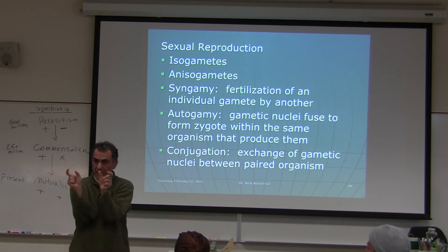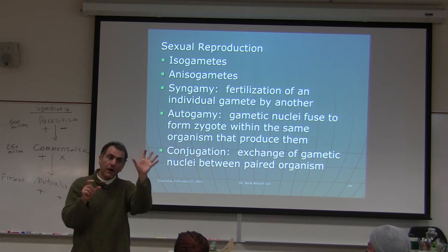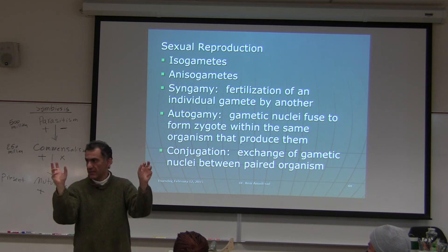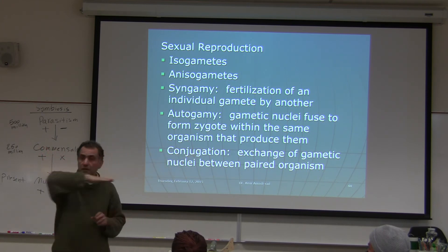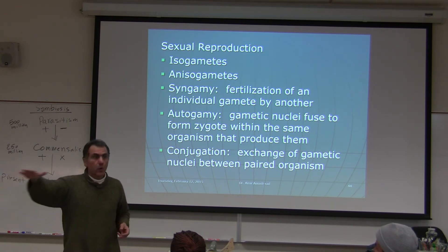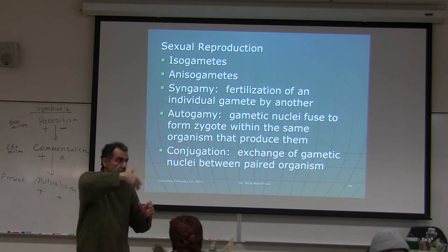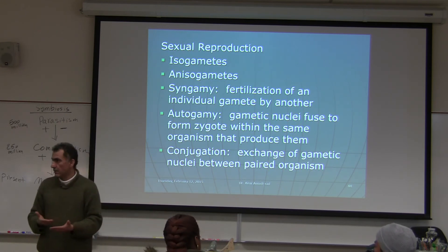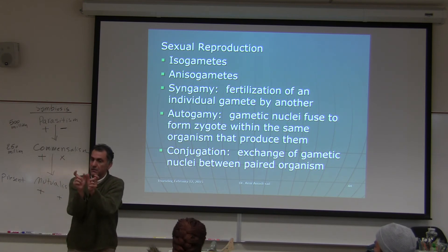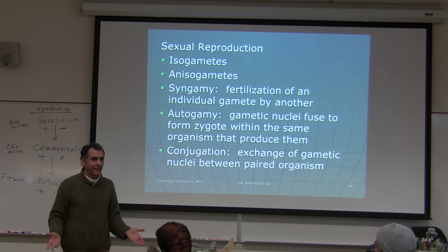The advantage of conjugation — exchanging nuclear material — is genetic diversity. When organisms are genetically diverse, a disease can wipe out some but others survive. Darwin called this natural selection. If all organisms were clones, a single disease could wipe them all out. That's why cloning is opposed — if we are all genetically identical, one event could kill all of us.